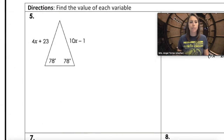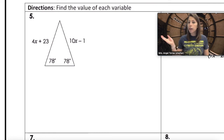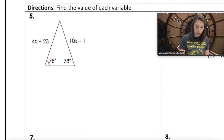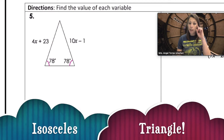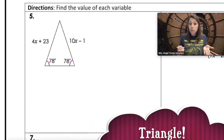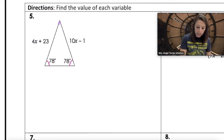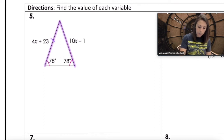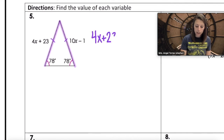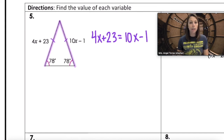Now let's get into some algebraic problems. I'll help you set up the equations and you'll finish solving. In triangle number five, we're given two equal angles, so we're thinking isosceles. If the angles are equal, the opposite sides are also equal, making our equation 4x plus 23 equals 10x minus 1.